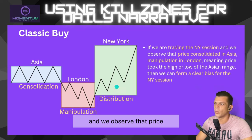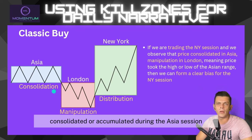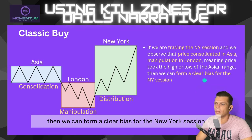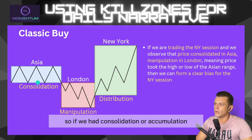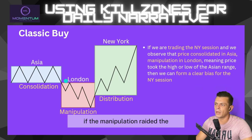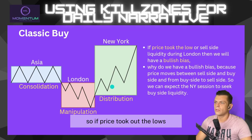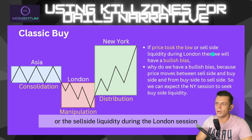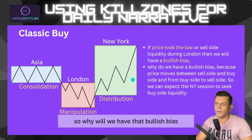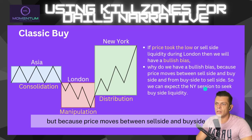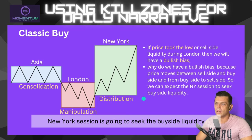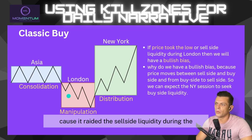In the classic buy model, if price consolidated during the Asia session and then manipulation occurred during the London session, we can form a clear bias for New York. If the London session took out the lows — the sell-side liquidity — from the Asia session, we will have a bullish bias going into New York. This is because price moves between sell-side and buy-side, so we can expect it to seek buy-side liquidity next.